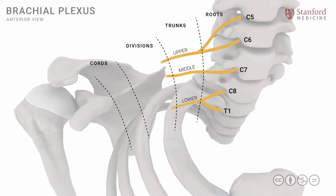Now each of these trunks divides into two divisions: an anterior division and a posterior division. And thus we have six divisions — two from the upper trunk (an anterior and a posterior), two from the middle trunk (an anterior and a posterior), and two from the lower trunk (an anterior and a posterior).